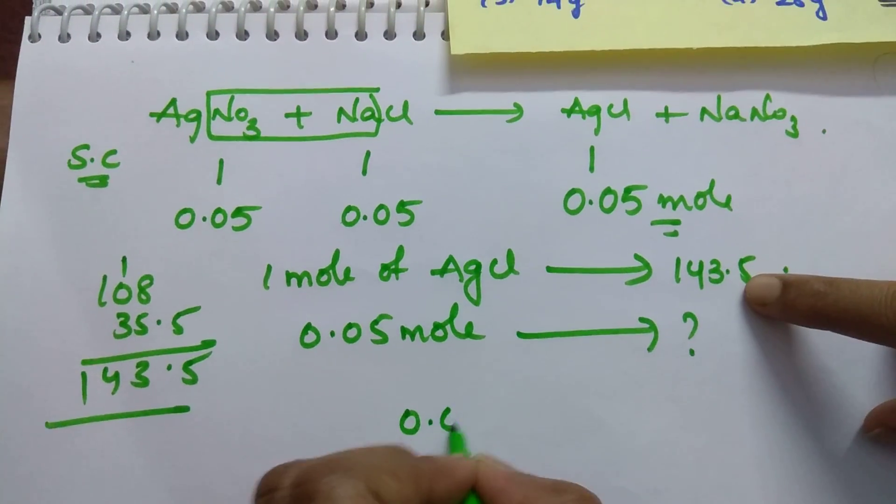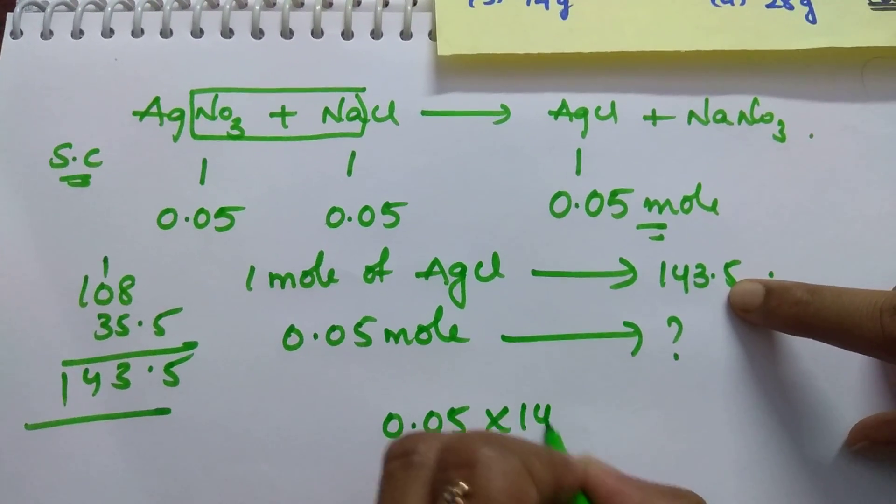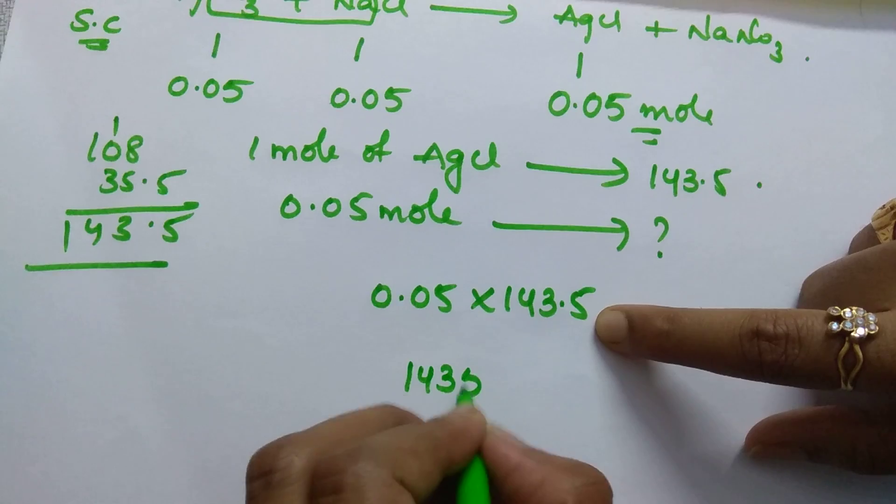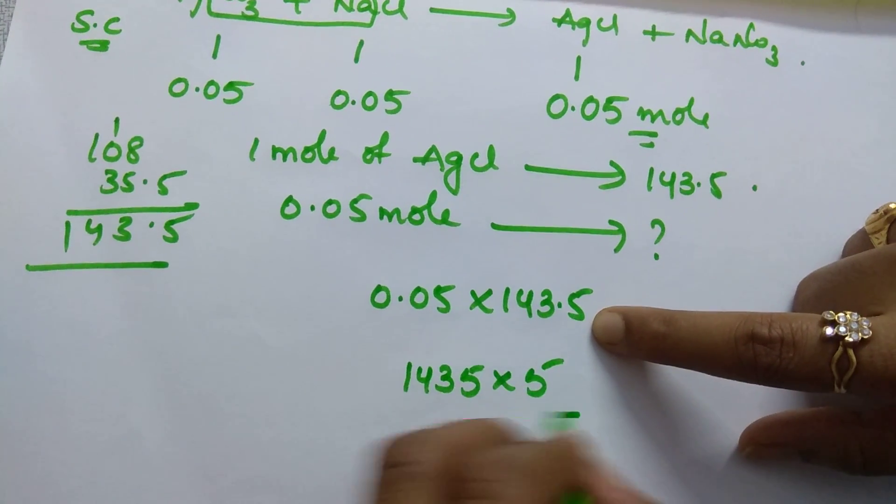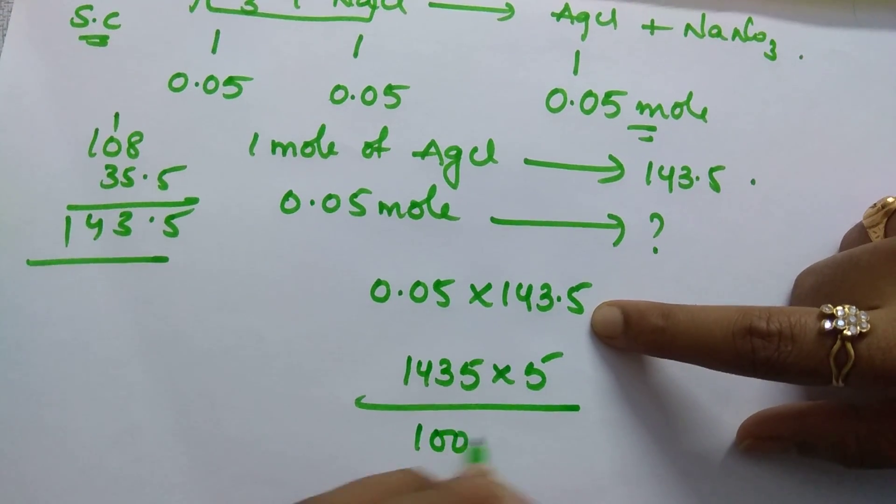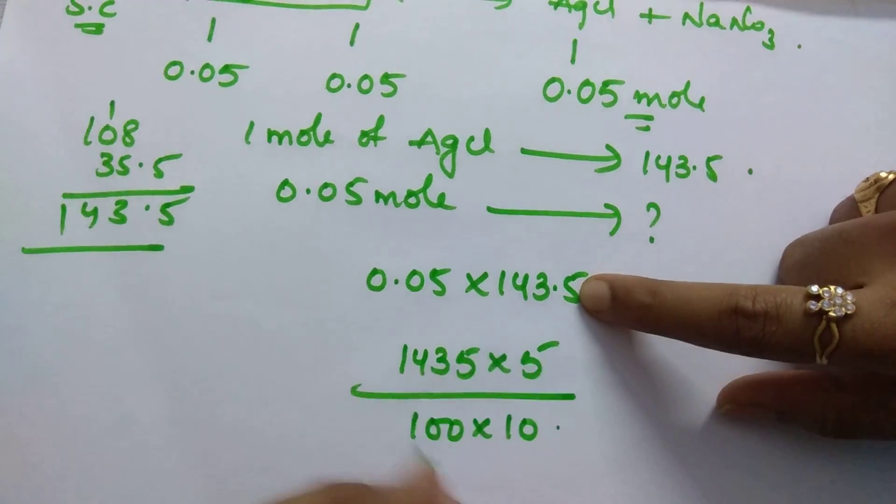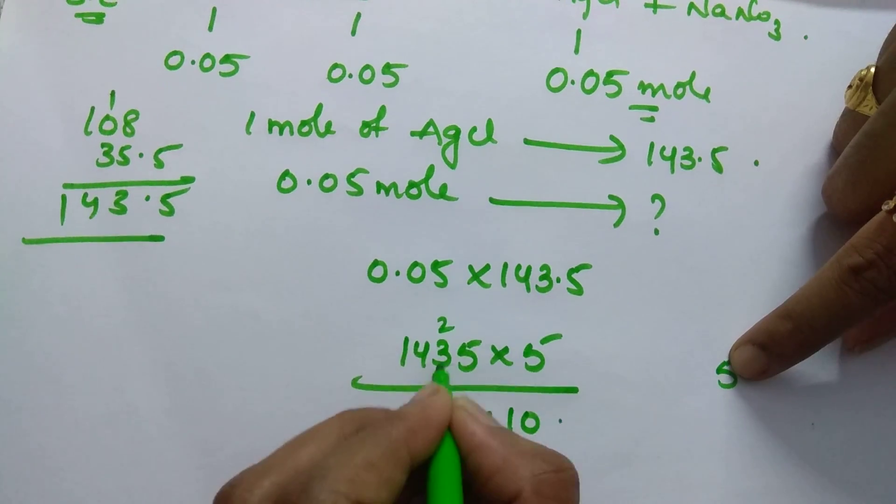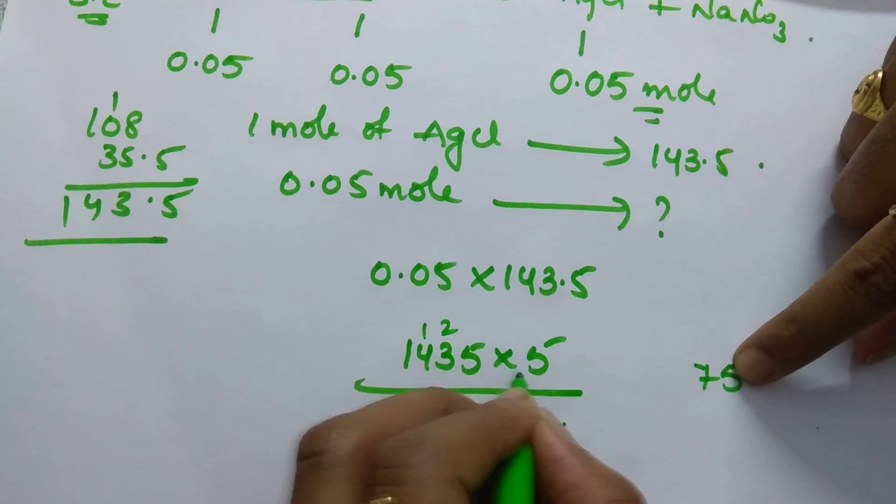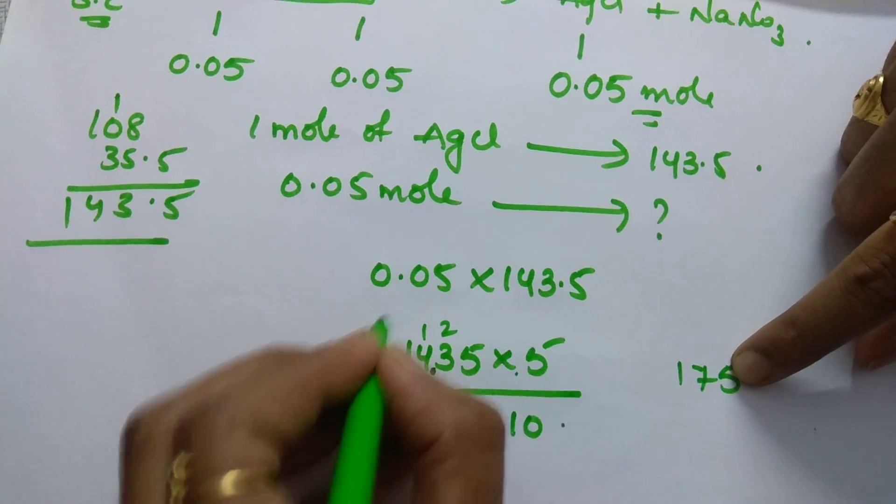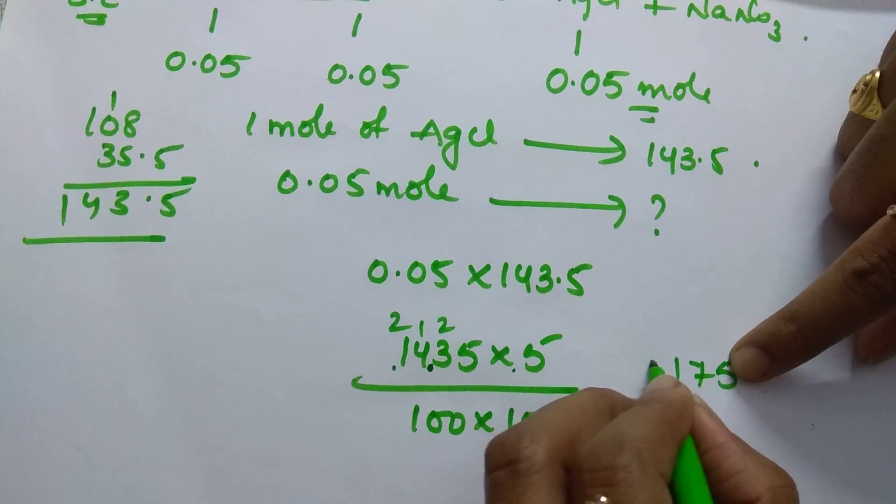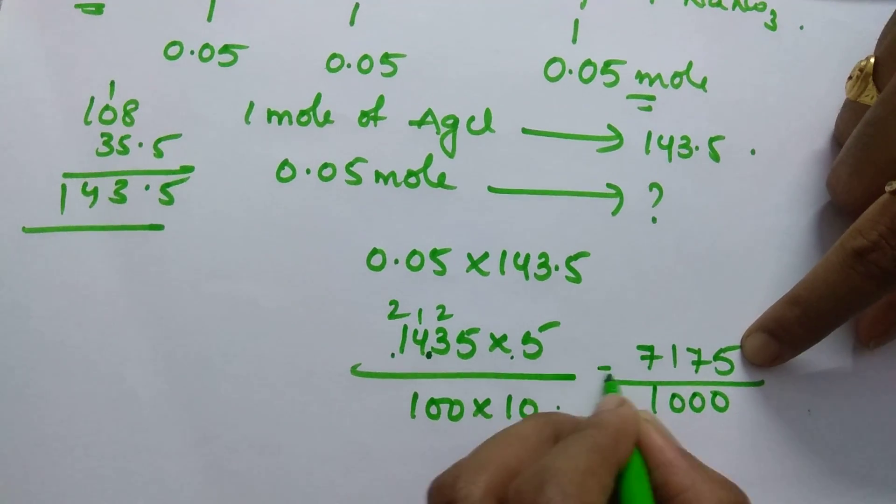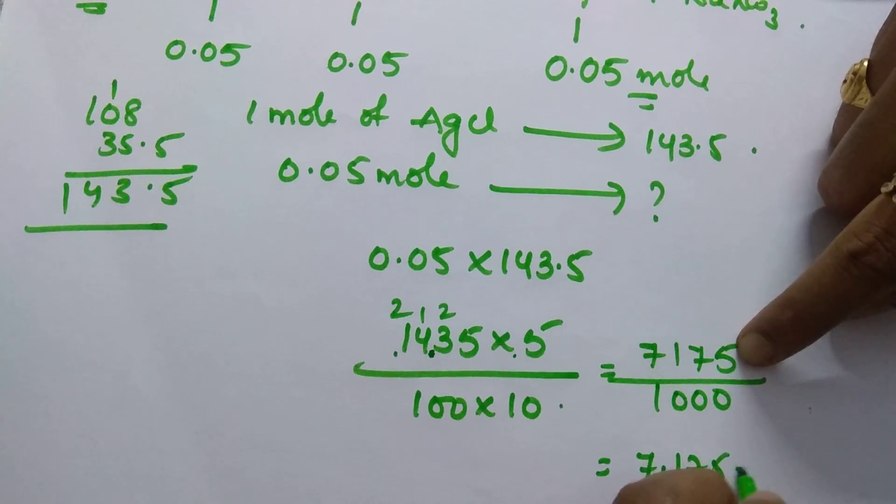Do cross multiplication 0.05 into 143.5. Then you can take it as 1435 into 5 divided by here 2 decimals 100, here 1 decimal 10. Then you calculate this out and divided by 1000. Then how much? 7.175 gram.